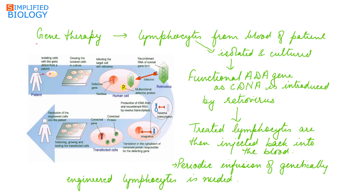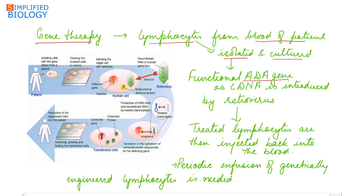SCID disease can be cured by gene therapy. In gene therapy, lymphocytes from the blood of the patient are isolated and cultured outside the patient's body. These lymphocytes have been extracted from the patient's body and cultured externally. A functional ADA gene — a gene that can code for adenosine deaminase enzyme — is introduced into these lymphocytes as cDNA, that is complementary DNA.